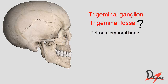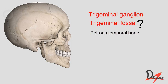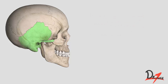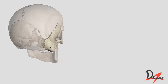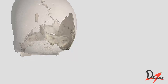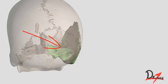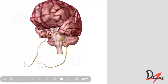Understanding the trigeminal fossa and petrous temporal bone can be tricky, so let us look at the temporal bone. The petrous temporal bone is associated with the temporal bone, and when you look inside, you find a pyramid-shaped structure — that is the petrous temporal bone. The trigeminal fossa lies on its anterior surface, and within this trigeminal fossa we have the trigeminal ganglion, from which the three nerve divisions arise.